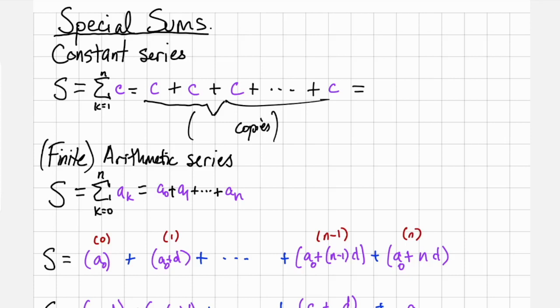Let's first talk about a simple series, the constant series. That is, a sum that looks like this: the sum from k equals 1 to k equals n of a constant c.